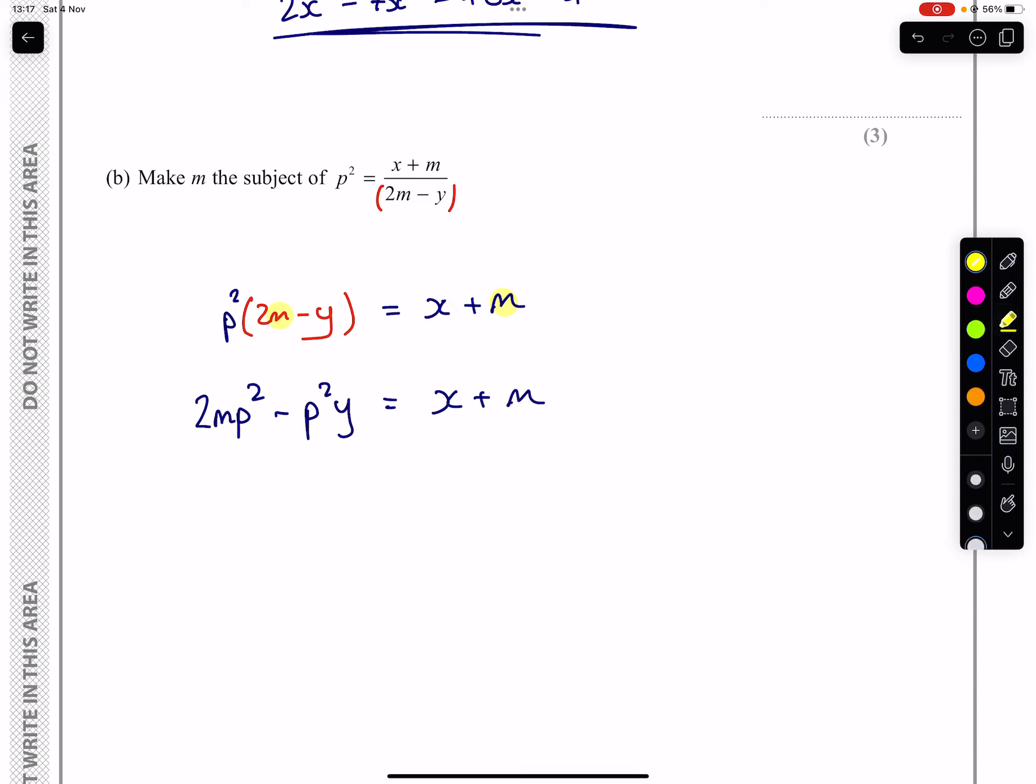Our next problem is still to get all of the M's on the same side. Everything that's not got an M in it, we want on the other side. So I'm going to take away M from both sides so that all of the M's are on the left. And then I'm going to add this P squared Y to both sides so that everything that doesn't have an M is on the right.